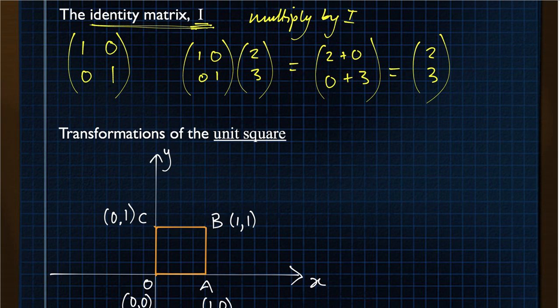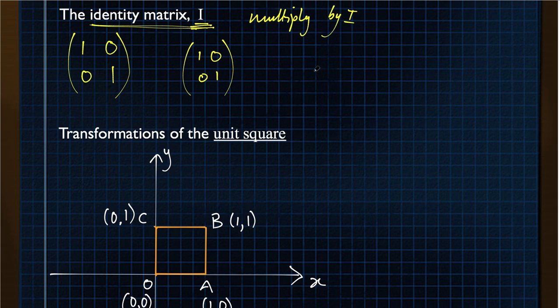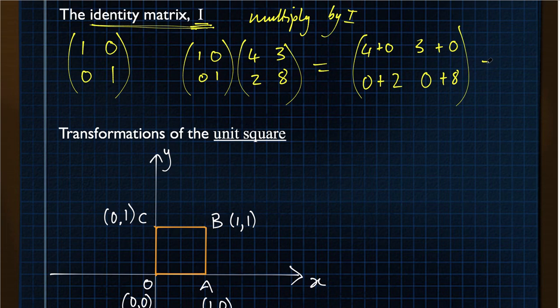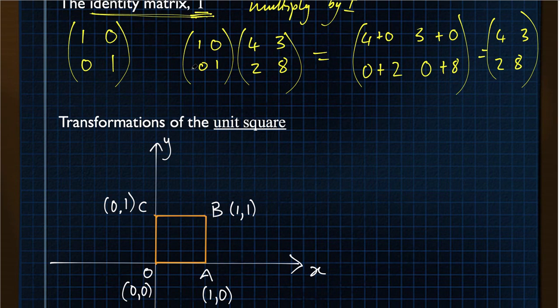The identity matrix has no effect when you multiply by it. We can have a look at what happens if we multiply by a 2 by 2 matrix as well. So 4, 3, 2, 8, for example. We have 1 times 4, plus 0 times 8. And then we've got 1 times 3, plus 0 times 8. We've got 0 times 4, plus 1 times 2. And 0 times 3, plus 1 times 8. Which is why the identity matrix works. So there we get 4, 3, 2, 8. Exactly the same as we started with. So this has no effect, the identity matrix.